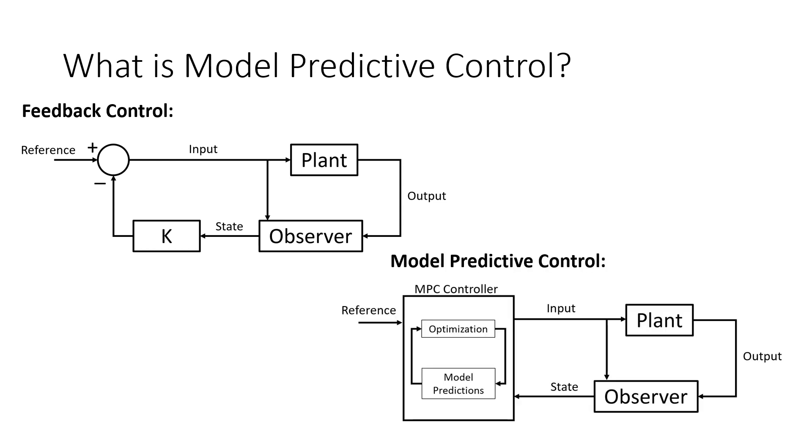In model predictive control, the process is quite different. After the observer estimates the current state of the system and feeds it to the controller, the model predictive controller predicts the future behavior of the system over some period of time. It then solves an optimization problem to determine what the next input to the system should be. This prediction and optimization cycle is then repeated every time the controller receives a new state estimate from the observer.